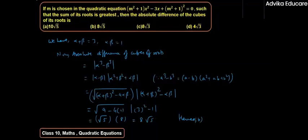Hence B is the correct option. In this question, we first found alpha + beta and alpha·beta in terms of m. Since m is chosen such that the sum of roots is greatest, we applied the condition m = 0, giving alpha + beta = 3 and alpha·beta = 1, and then computed the absolute difference of cubes.